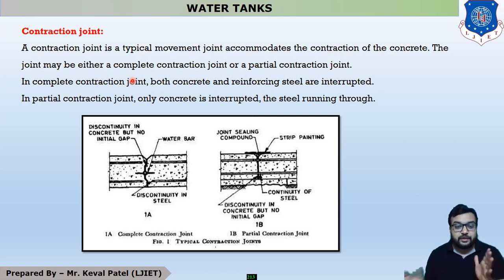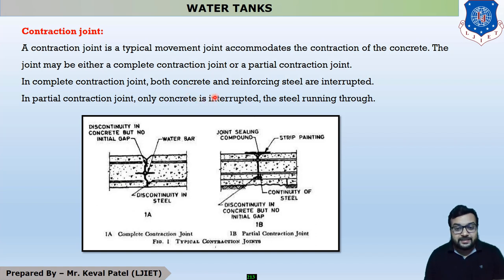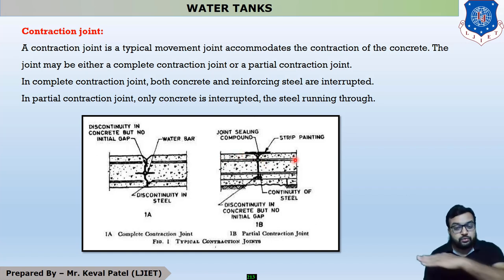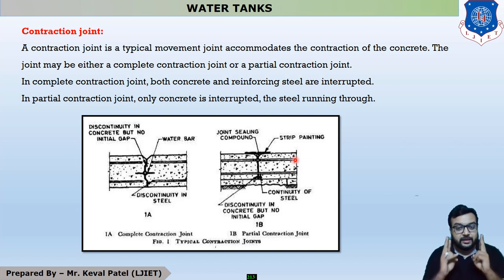The joint may be either a complete or a partial contraction joint, and both types are shown in the figure. In complete contraction joint, both concrete and reinforcement steel are interrupted. In partial contraction joint, only the steel is interrupted but the concrete runs through continuously. This is the main difference between the complete and partial contraction joint.